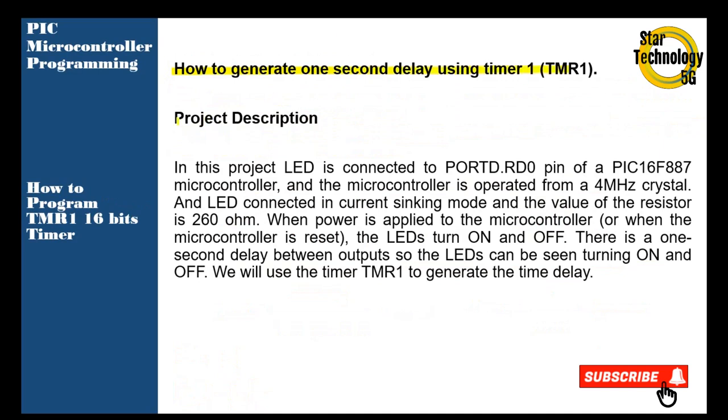How to generate one second delay using Timer 1? Project description: In this project, an LED is connected to the RD0 pin of PIC16F887 microcontroller. The microcontroller is operated from a 4MHz crystal. The LED is connected in current sinking mode with a resistor value of 260 ohms. When power is applied to the microcontroller or when the microcontroller is reset, the LED turns on and off with one second delay between outputs.